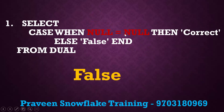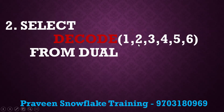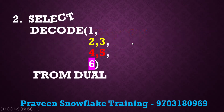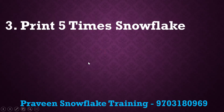The second question is DECODE(1, 2, 3, 4, 5, 6). The answer is 6. DECODE works as key-value pairs: 2 is the key, 3 is the value; 4 is the key, 5 is the value. Since 1 doesn't match any key, it goes to the else part, which is 6. If input were 4, the answer would be 5.